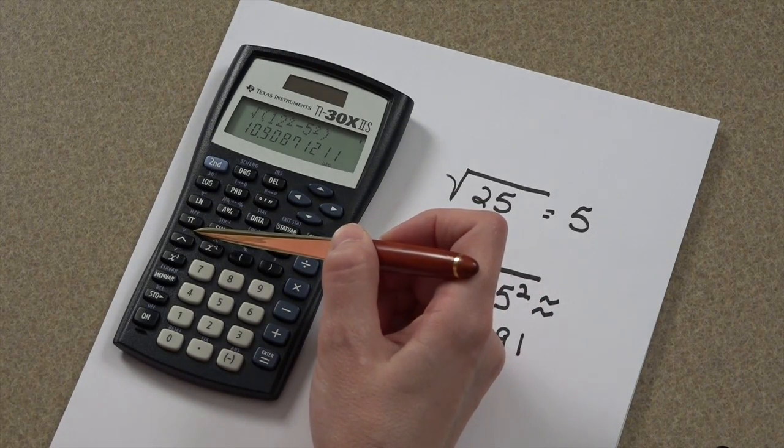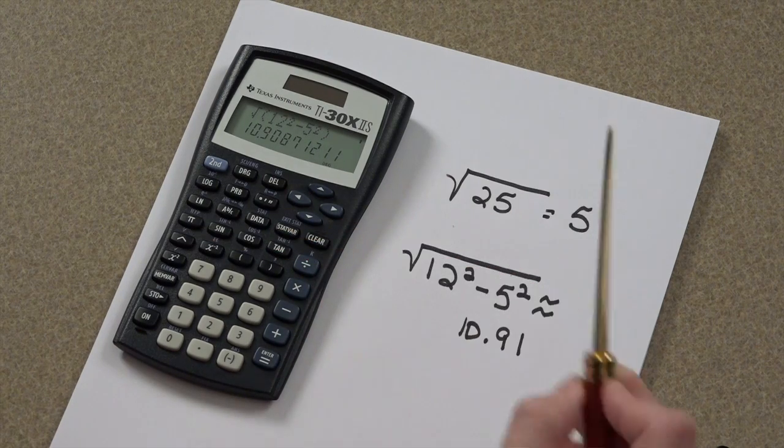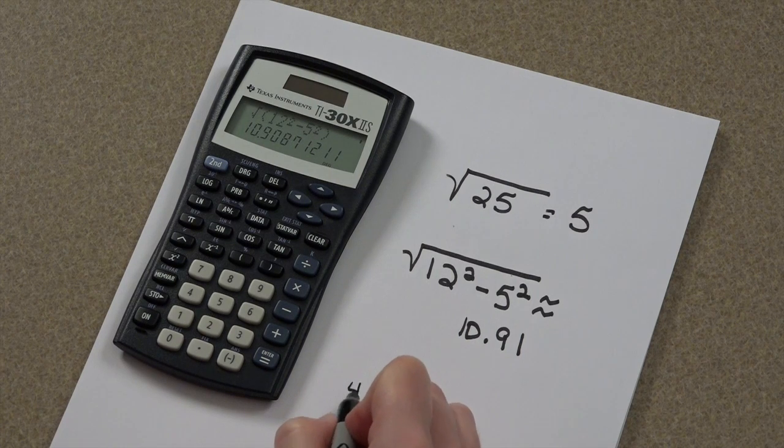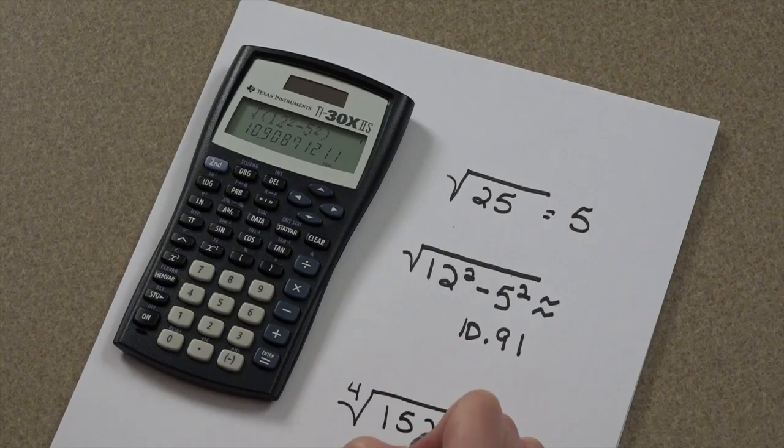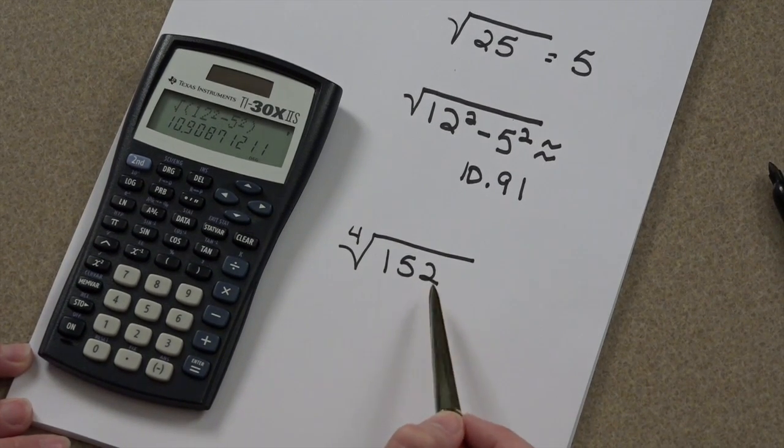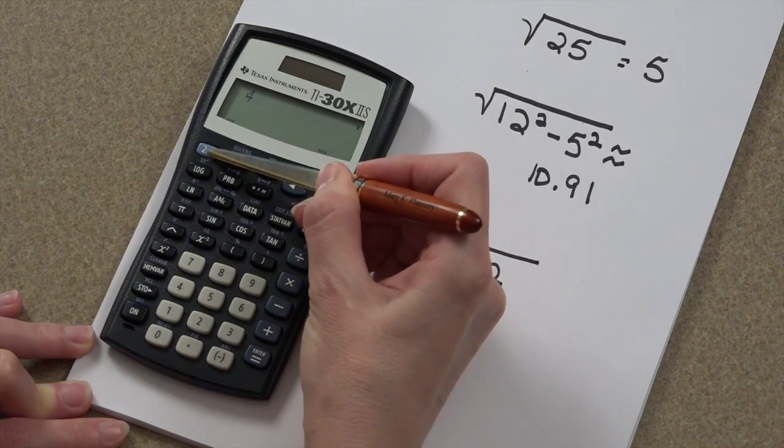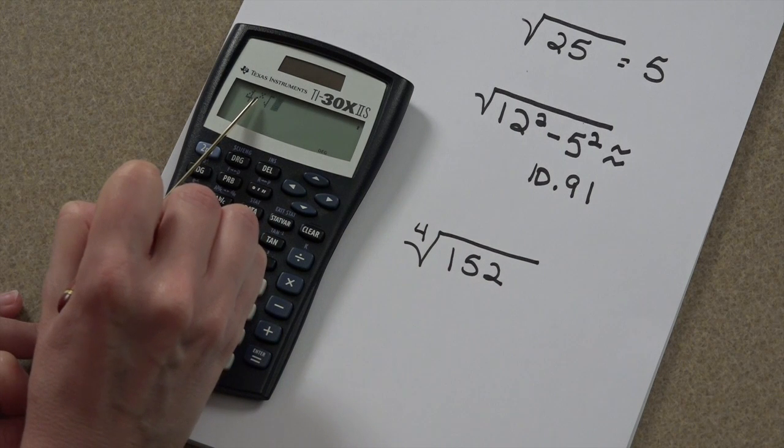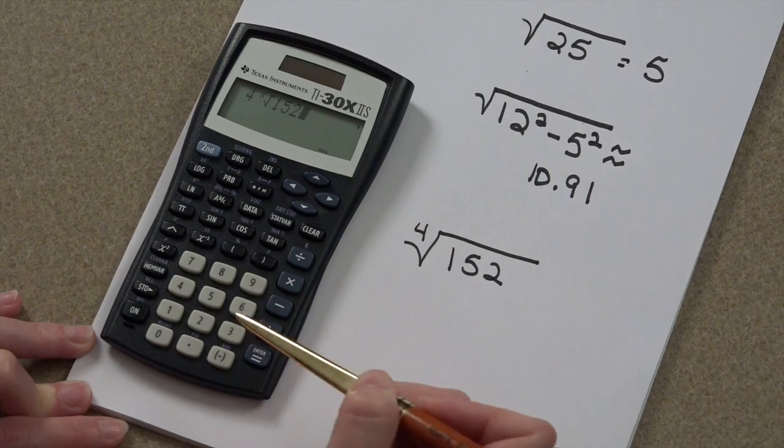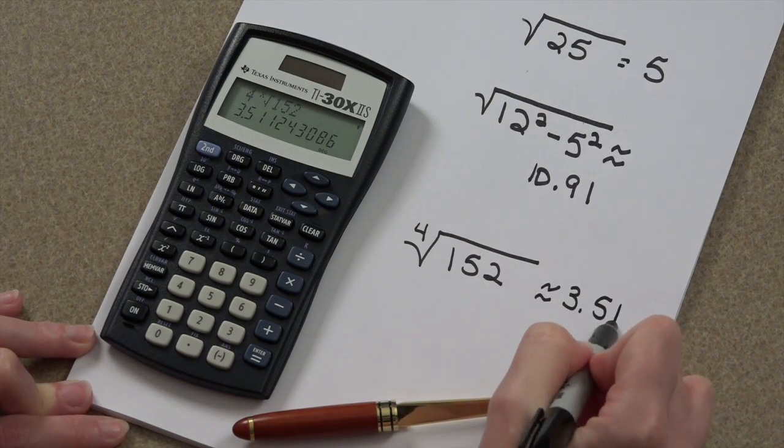You can find roots other than square roots. Above your caret key, you have an x root button. That allows you to find roots other than square roots. Let's say we want to take the fourth root of 152. You enter this expression exactly as you see it. You want the fourth root. So you tell your calculator, 4. Press the second button and your caret key. That little x right there, that says that the 4 will replace that x. So that's how your calculator knows to take the fourth root of 152. That equivalent is 3.51.